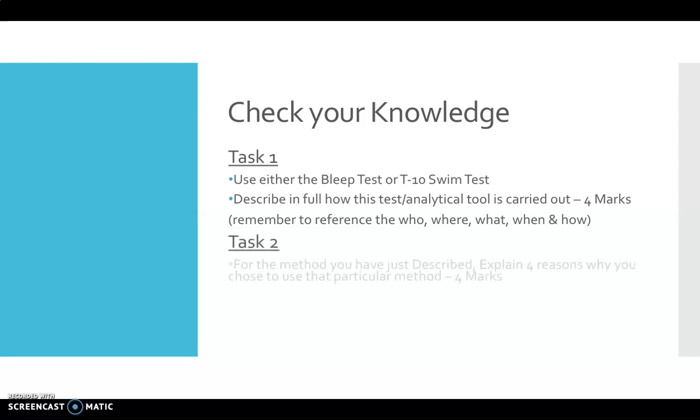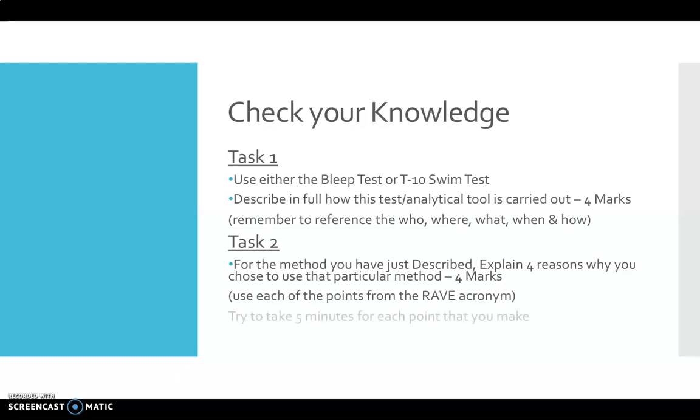For task two, for the method you've just described, I want you to give four reasons, four explanations of why you chose to use that particular method. And to do this, I want you to use each of the points that we've just talked about from the RAVE acronym. Try to take five minutes for each point that you make. This is for higher guys, try to take five minutes for the points that you make.